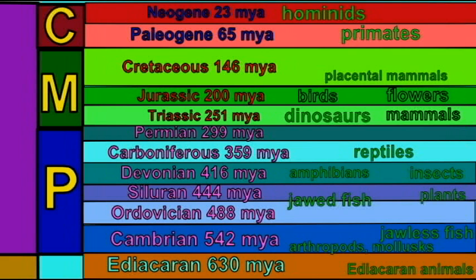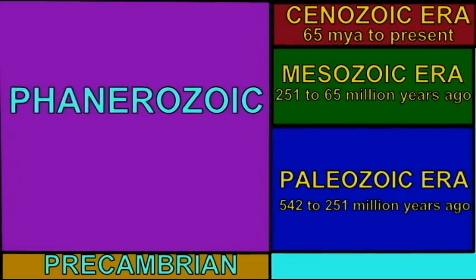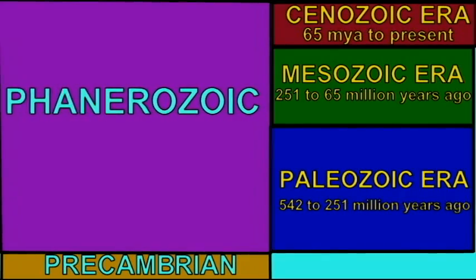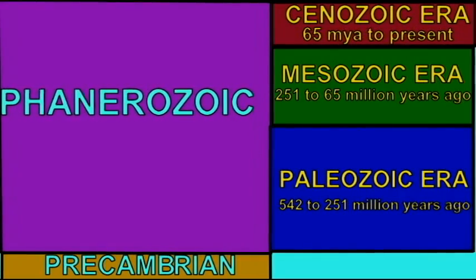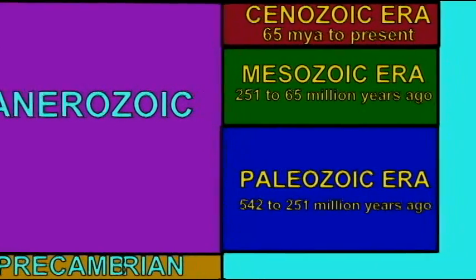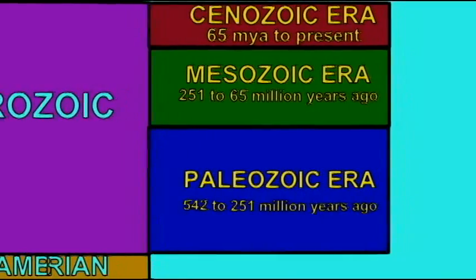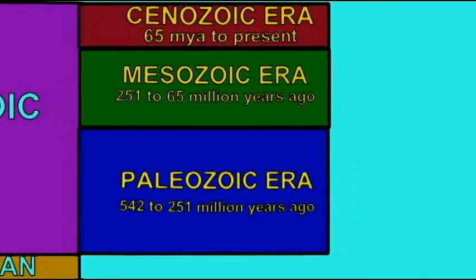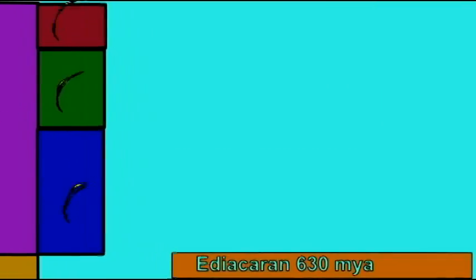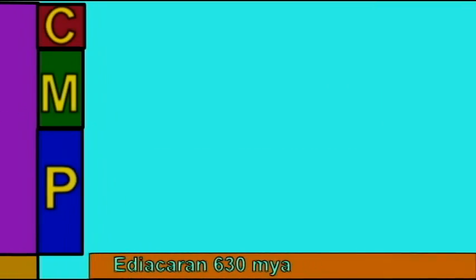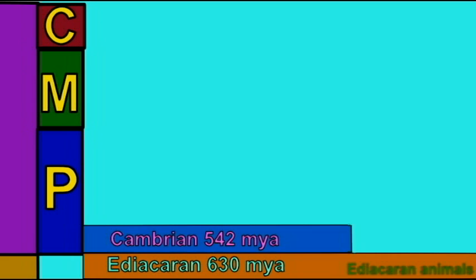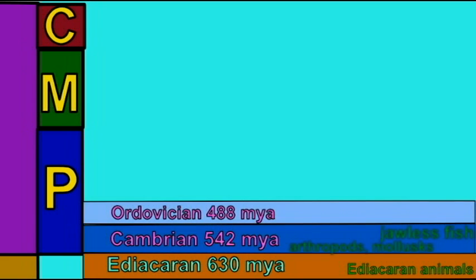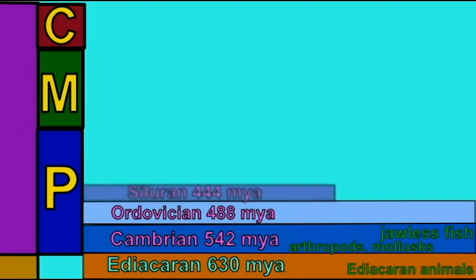The Mesozoic era begins with the Triassic period, which witnesses the first dinosaurs and mammals. The first birds and flowering plants evolve in the Jurassic period. And the Cretaceous period marks the end of the Mesozoic era, with a mass extinction that dooms the dinosaurs.